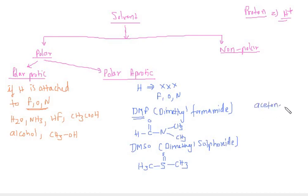So it is DMF, DMSO, then comes acetone: CH3-C double bond O-CH3. So these are the examples of polar aprotic solvent.